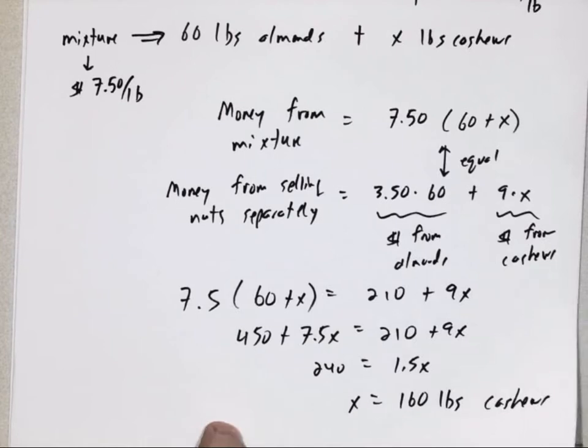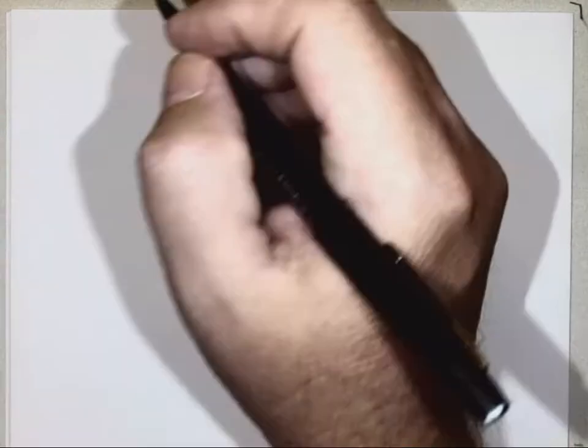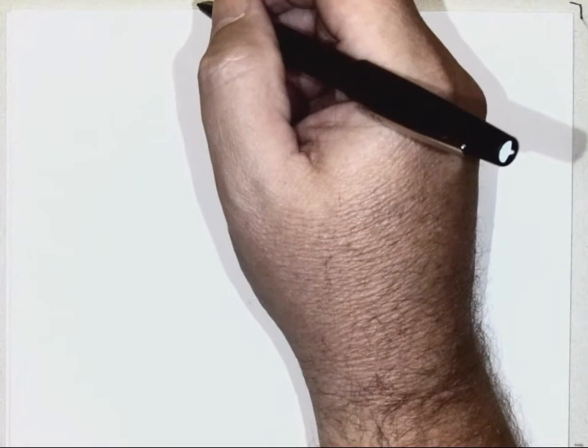Let's do maybe one more, just to give you a feel for how to think about things. This last one is talking about a boat in the water — it's labeled physics uniform motion. It says: a motorboat can maintain a constant speed of 60 miles per hour relative to the water. The boat makes a trip upstream to a certain point in 20 minutes. The return trip takes 15 minutes. What is the speed of the current?